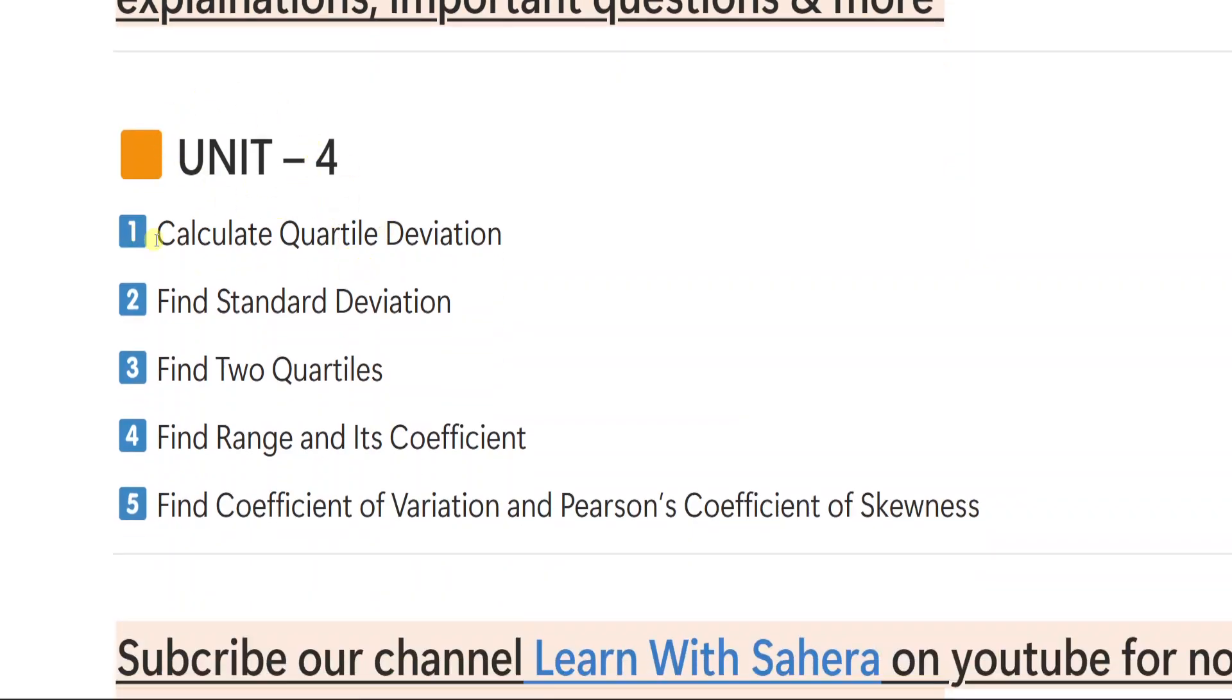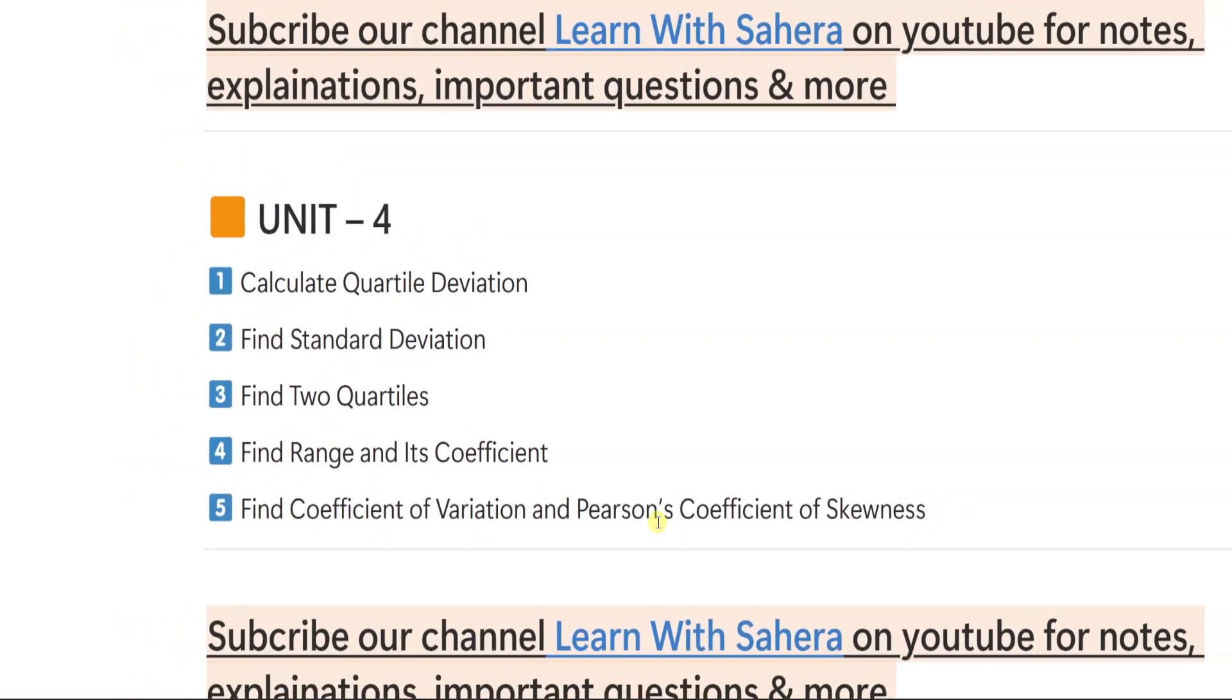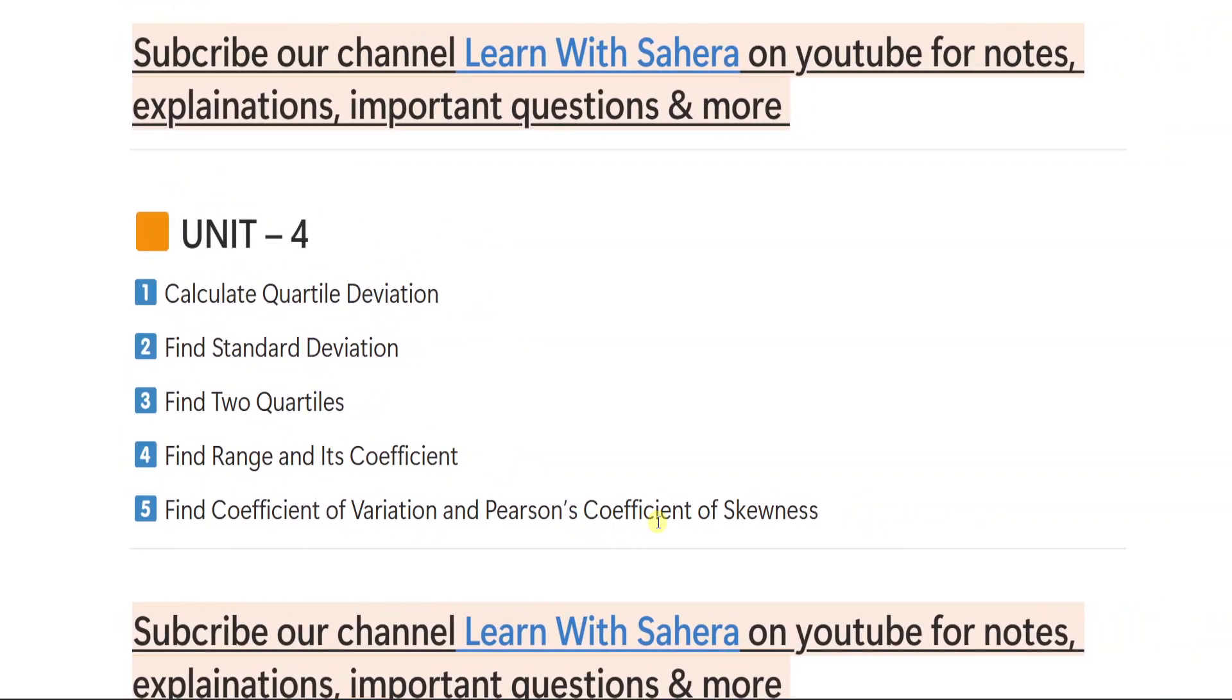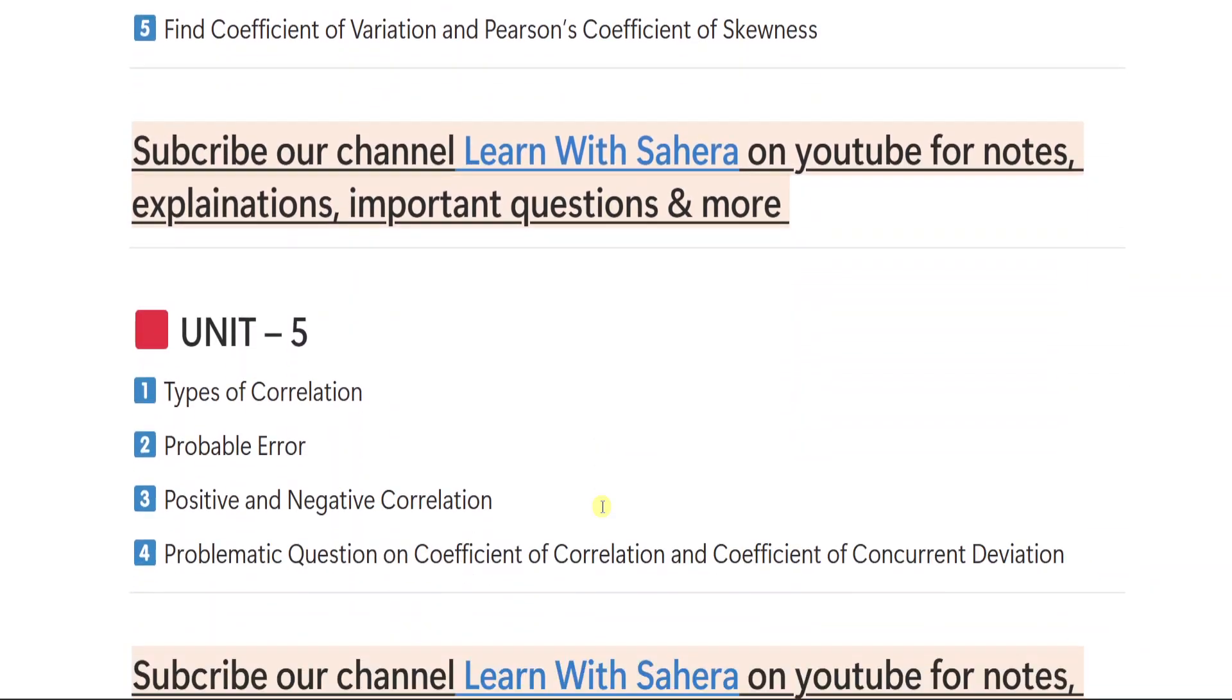From unit number 4, first important question is calculate quartile deviation. Find standard deviation. Find two quartiles. Find a range and its coefficient. Find coefficient of variation. And Pearson's coefficient of skewness. Carl Pearson's coefficient of skewness you need to find. If you are perfect with the long problematic question, then easily you can do it. No doubt in that.